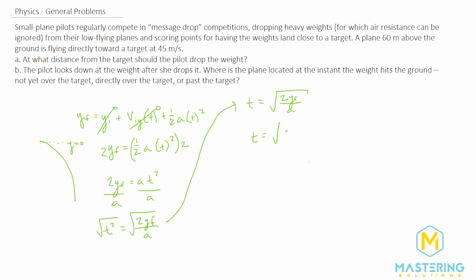So time will be equal to the square root of two times the y final and they say it's 60 meters above the ground. So that'll be a negative 60 meters as we discussed right here. We'll divide that by acceleration and in this case it's in free fall. So it'll be a negative 9.8 meters per second squared.